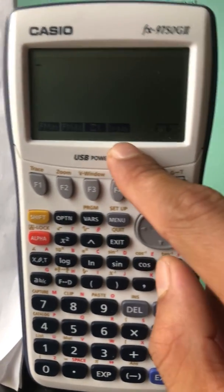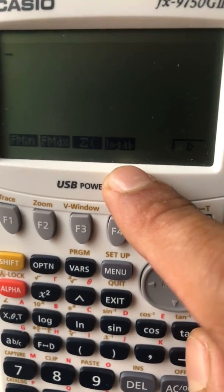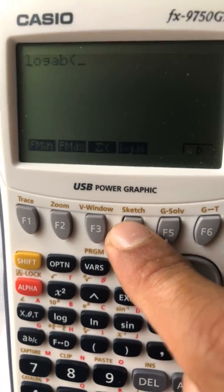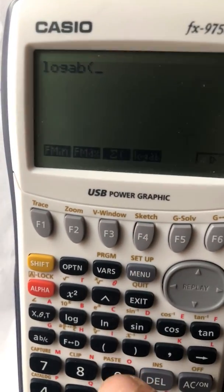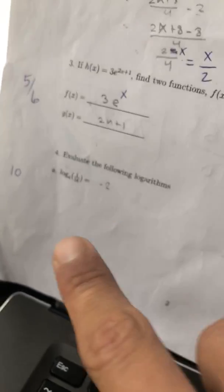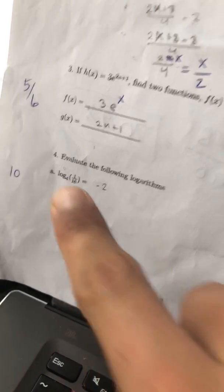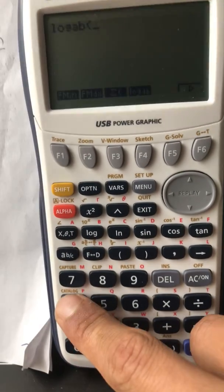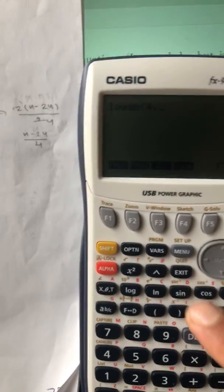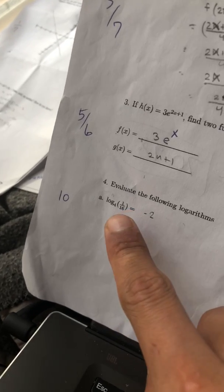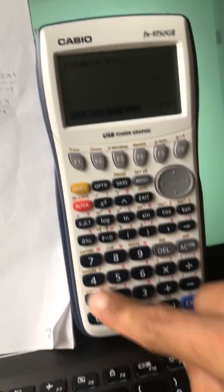get to the option called log AB. Select log AB, and after that, enter the base 4. So hit 4, comma, and then enter 1 divided by 16.